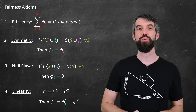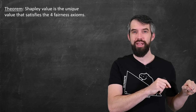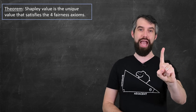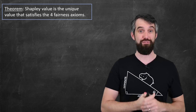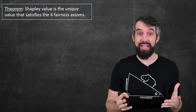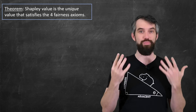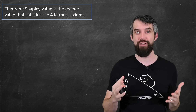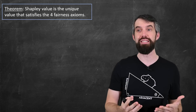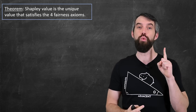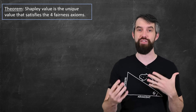We have an incredible theorem: the Shapley value is the unique way to divide up the value such that those four fairness axioms are all satisfied. If you try to do it any other way, one of the axioms is going to be violated. The Shapley value isn't just something made up and pleasing — it's the unique way to fairly divide it according to those four notions of fair division.